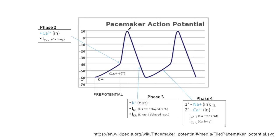Once the cell has reached its maximum point of depolarization, phase 3 occurs. This is where potassium channels — both fast and slow — open and the calcium channels close, causing the cell to completely repolarize. After this, the funny current channels kick in again in phase 4, and we just undulate through that like a waveform.